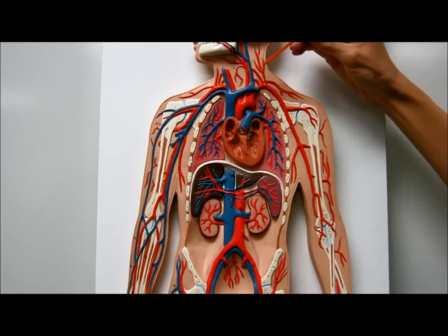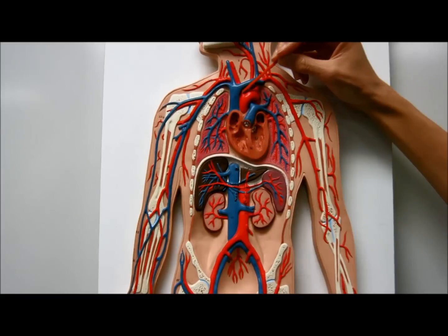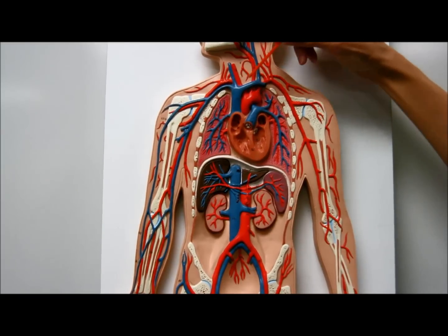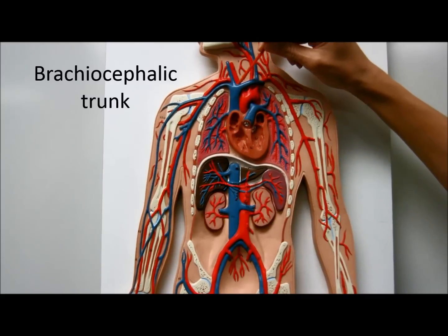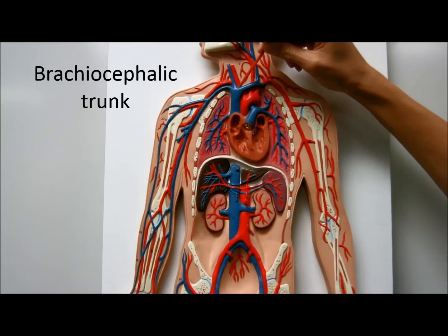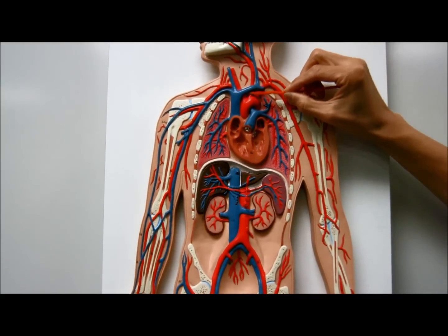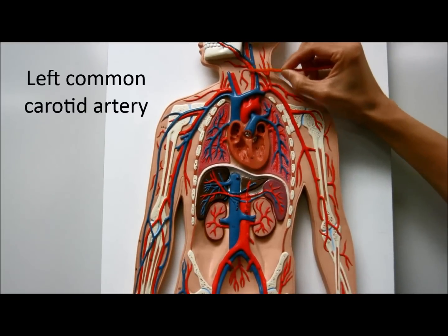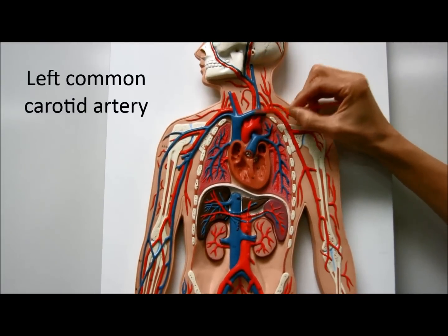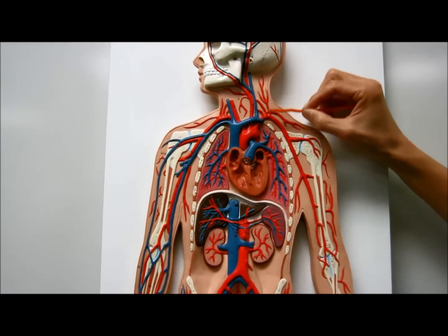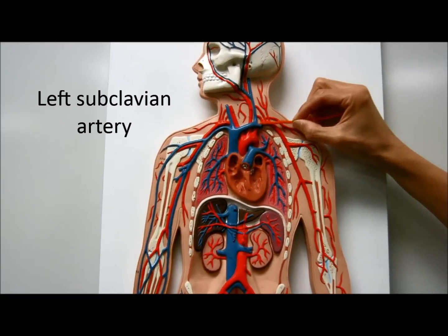The aortic arch has three branches coming out of it. This is the brachiocephalic trunk — the one in red here. The second one is the left common carotid artery. And this one here is the left subclavian artery.